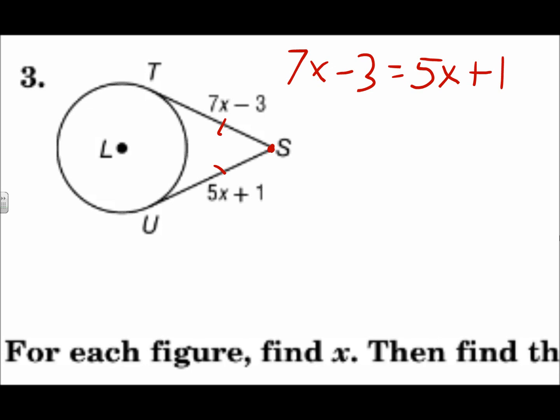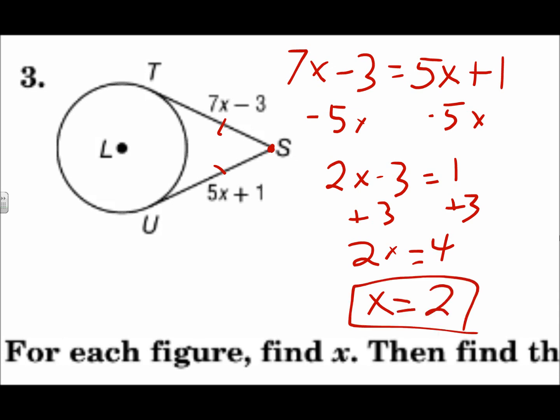7x minus 3 equals 5x plus 1. Solve for x. Get your x's on the same side by subtracting 5x. Add 3 to both sides. And divide by 2. So x is 2. But again, that all came from these two segments being congruent. Because tangents that intersect at the same point are congruent.